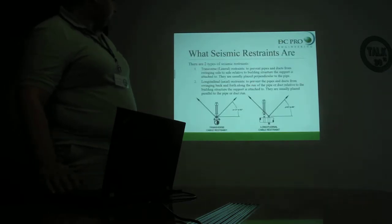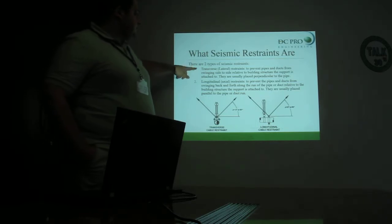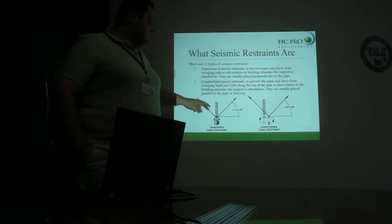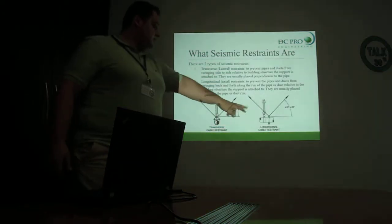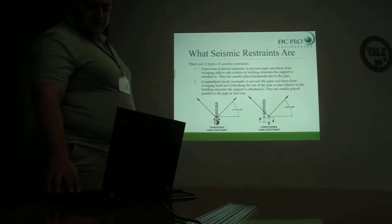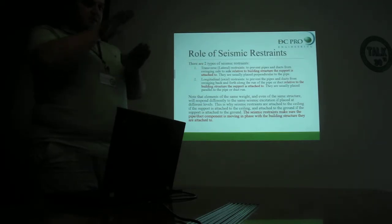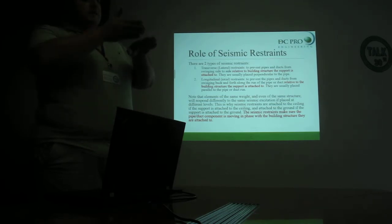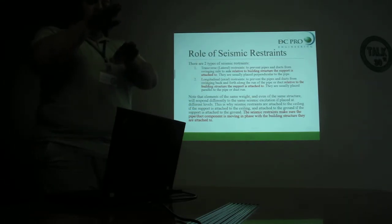Seismic restraints are cable structures connected to the support. We have two types: transverse restraints, which prevent the pipe from swinging side to side relative to the building structure, and longitudinal restraints, which prevent back-and-forth movement along the pipe axis. Simple cables do not stop several tons of piping from moving; rather, the idea is to keep the movement of the piping as close as possible to that of the building. Different levels in the same building respond differently to an earthquake. If the building moves one way and the pipe moves differently, the support in between will break due to shear forces. The role of seismic restraints is to keep the movement of the piping and building in phase to keep the supports intact.